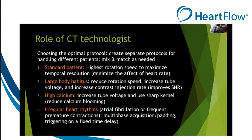If a patient has high coronary calcium, we want to increase tube voltage and use a sharp kernel to reduce calcium blooming. When I started reading coronary CTA 15 years ago, we wouldn't scan patients with a calcium score over 400. Nowadays in our practice, we don't have a calcium score cutoff — we've scanned patients with scores of 4,000 and still had diagnostic quality images, largely due to the benefits of FFRCT. For patients with irregular heart rhythms such as atrial fibrillation or frequent premature contractions, we can use multi-phase acquisition with temporal padding or trigger on a fixed time delay.